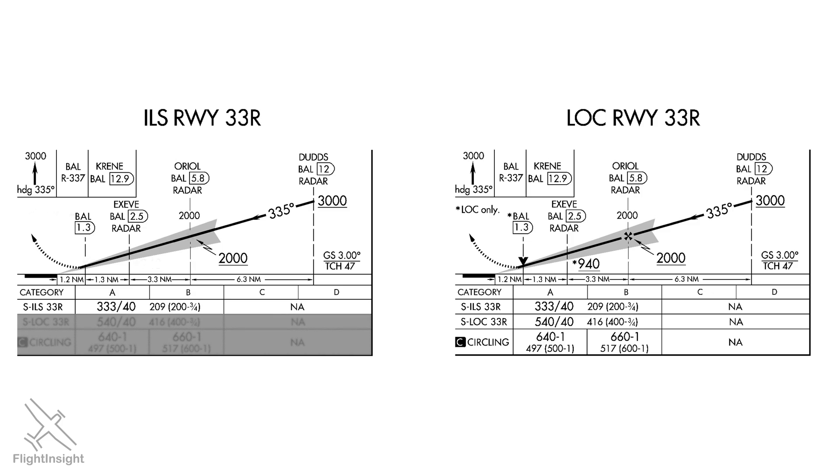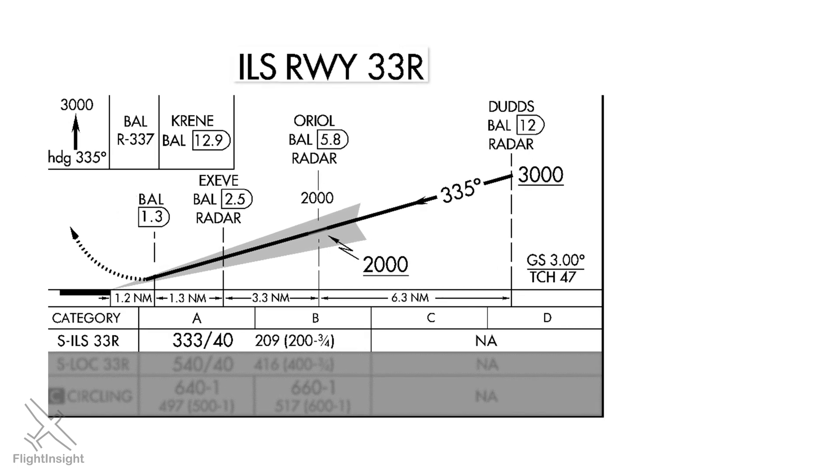Here's what just an ILS approach depiction would look like, and notice we're only looking at the ILS minimums at the bottom, and here's the localizer only but with just those minimums. We'll ignore the circling minimums altogether here, but notice the other small differences between the two, and let's examine each in detail starting with the ILS.